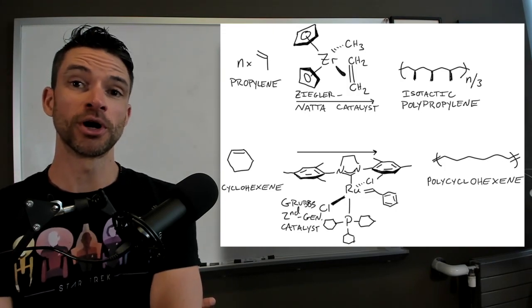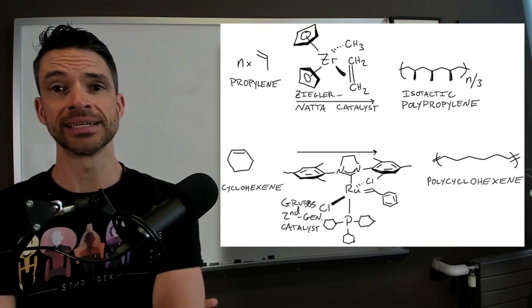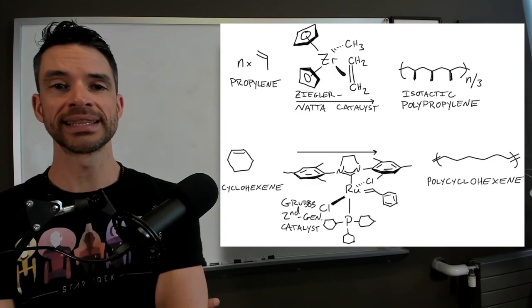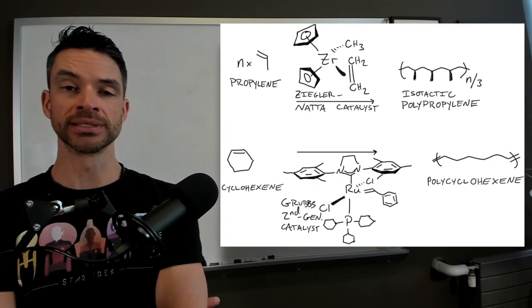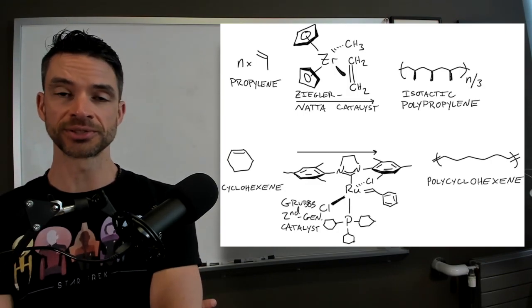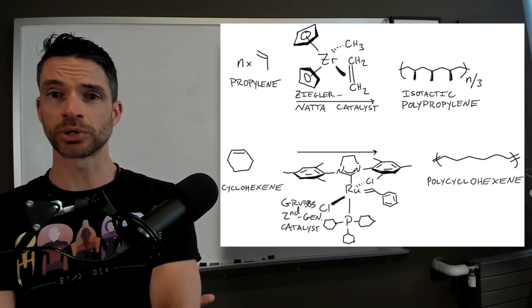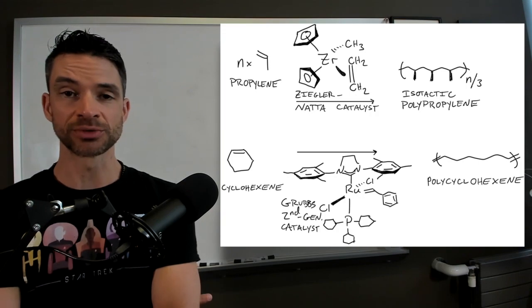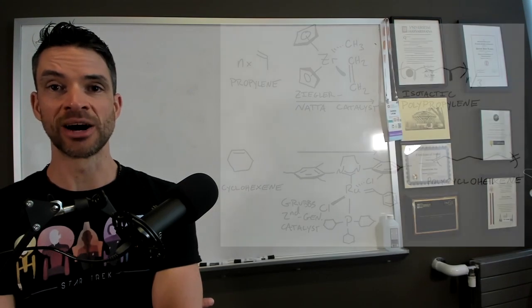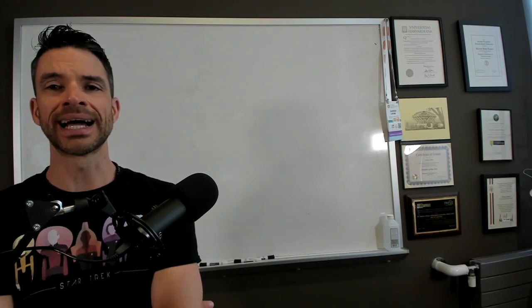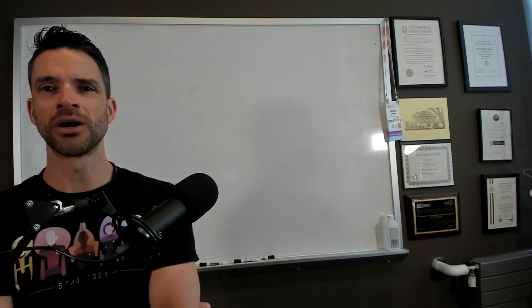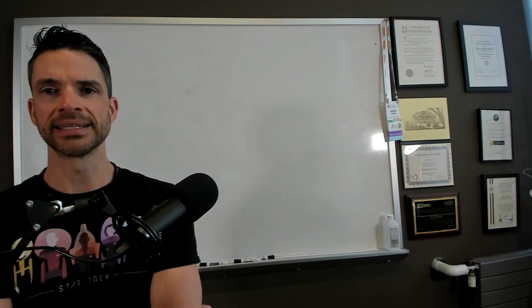Those are examples of homogeneous catalysis that give you a lot of control, and these are used widely in the fine chemicals industry like pharmaceuticals, for example. But in terms of pure tonnage, heterogeneous catalysis wins hands down.